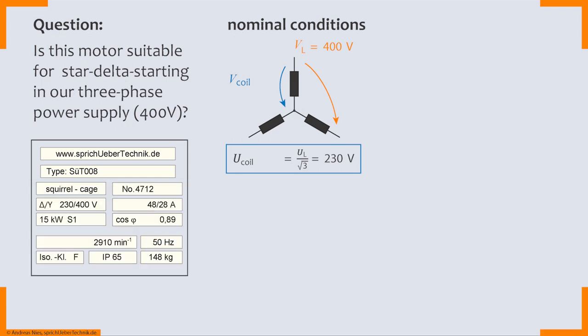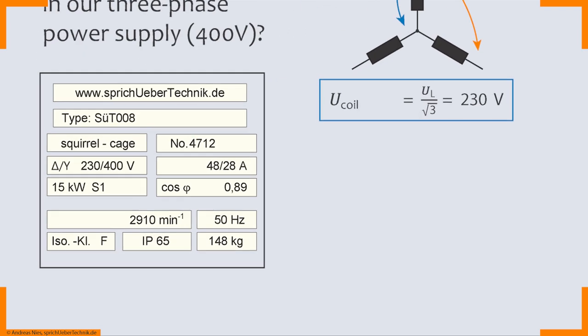So 230 volts for star connection in this case. This is obviously the voltage at each of the coils. And now we are going to have a look at the delta connection.